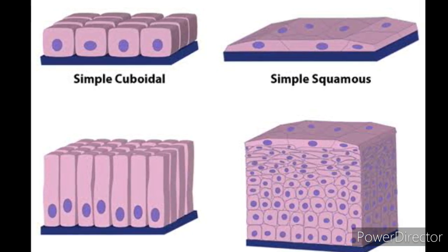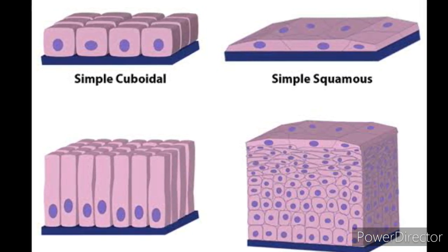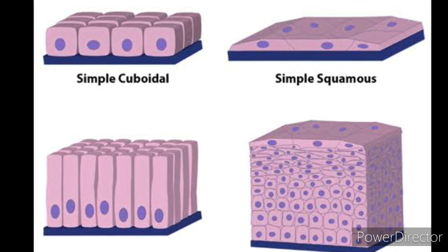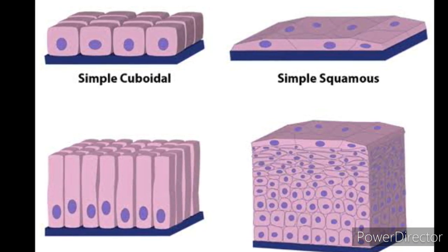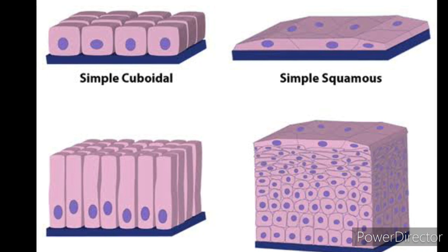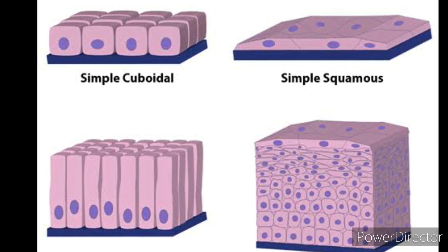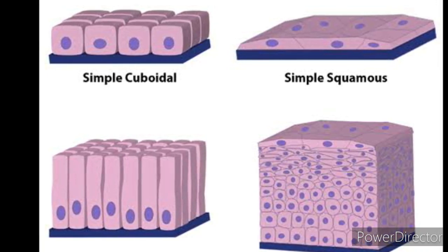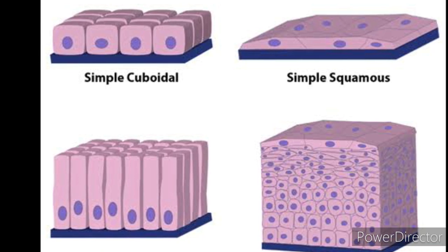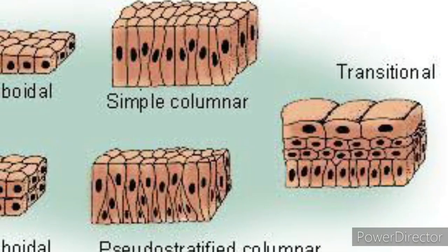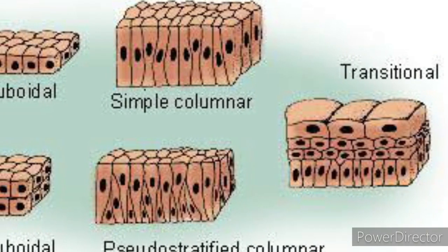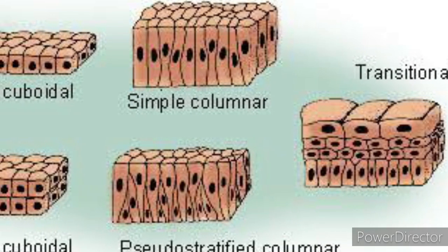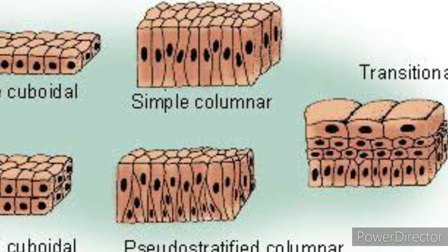This lining also acts as a selectively permeable membrane. The permeability concept will be discussed in our next chapter on plasma membrane. The second type is stratified squamous epithelium, where cells are arranged in the form of layers.